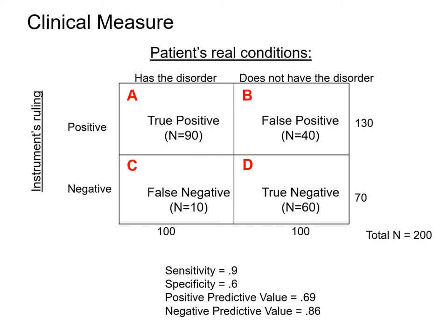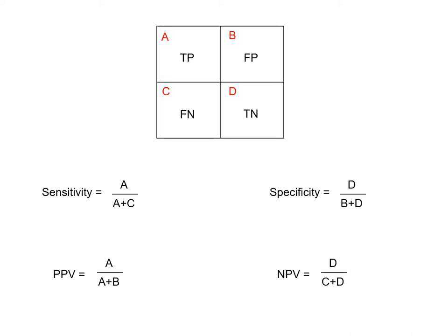Looking at a specific example with N of 200: the sensitivity is 0.9, the specificity is 0.6, the positive predictive value is 0.69, and the negative predictive value is 0.86. Sensitivity is calculated as the number of true positives divided by the number of true positives plus the number of false negatives.